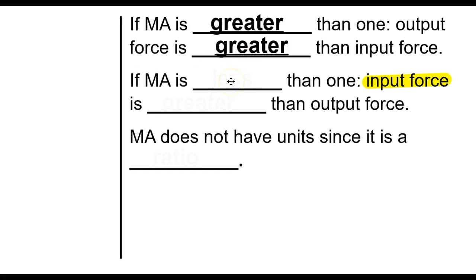However, there are some machines that allow you to move something over a larger distance instead. If your mechanical advantage is less than one, like 0.5 or 0.25, it means your input force is greater than your output force. You're not getting as much output force, but it does allow you to increase the distance over which that force is applied.